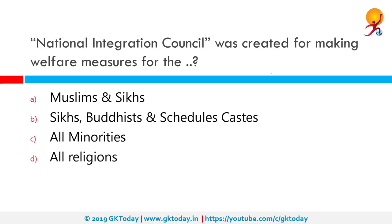The National Integration Council was created for making welfare measures for whom? The National Integration Council, or NIC, was set up in June 1962 by Prime Minister Jawaharlal Nehru to address the problems of communalism and regionalism in India. It is chaired by the Prime Minister and has members from union ministers to leaders of opposition in Lok and Rajya Sabha, chief ministers of states, union territories, leaders of national and regional political parties, eminent journalists and public figures. The NIC is an extra-constitutional body which does not have statutory or constitutional backing. The correct answer is all minorities.